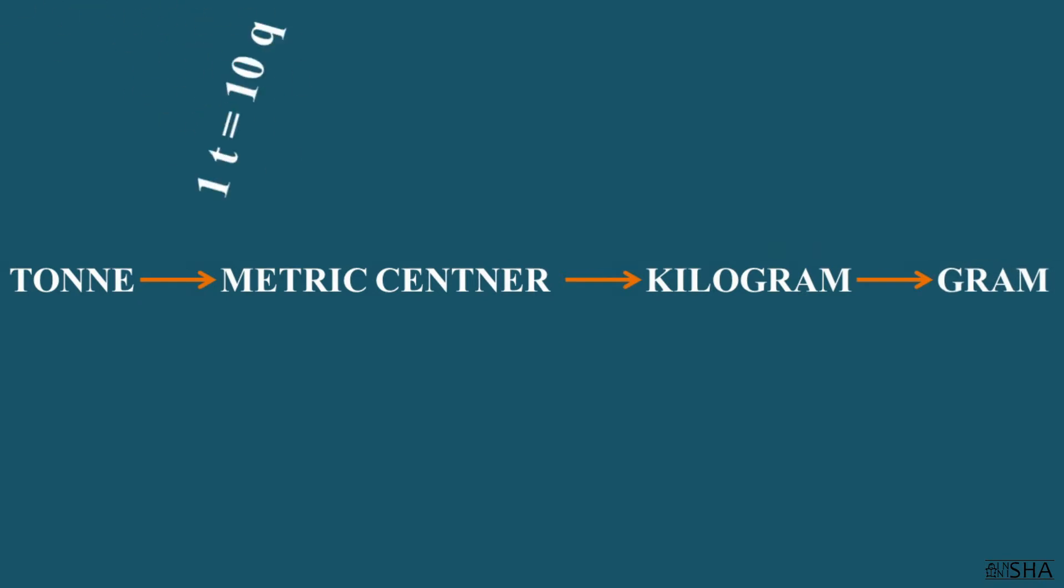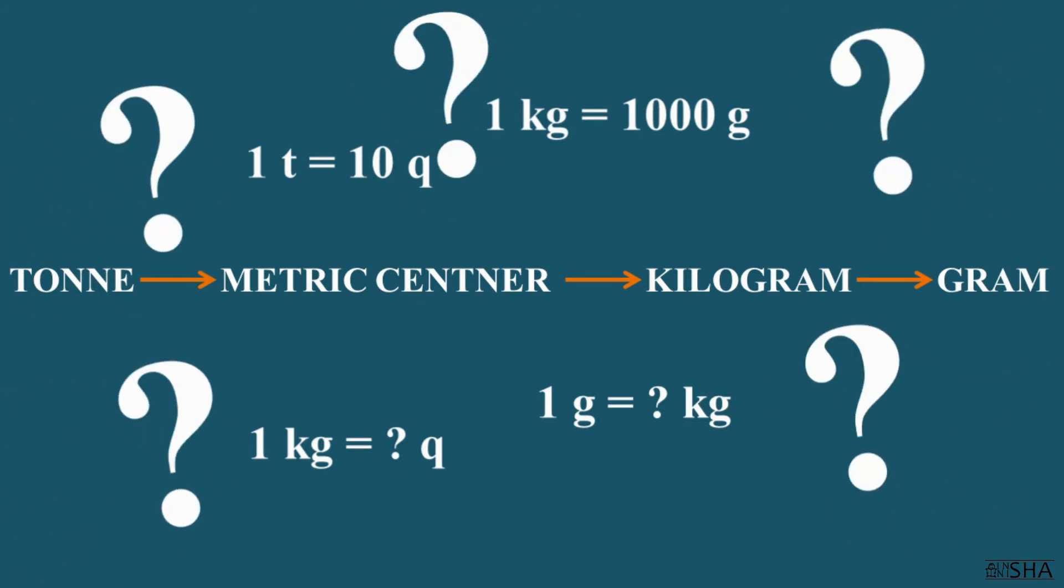Therefore, to convert the units of mass, we will use this chain. The largest unit of mass is a ton. It's followed by centenar, then by kilogram and gram. How many times have we tried to remember that there are ten metric centenars in one ton and a thousand grams in one kilogram? And how many centenars are there in one kilogram or kilograms in a gram? Got confused? So did we.